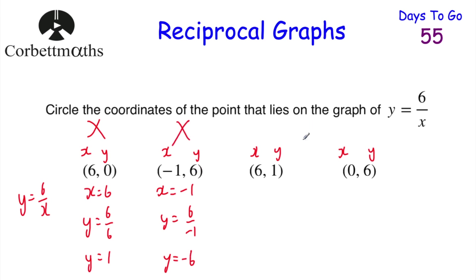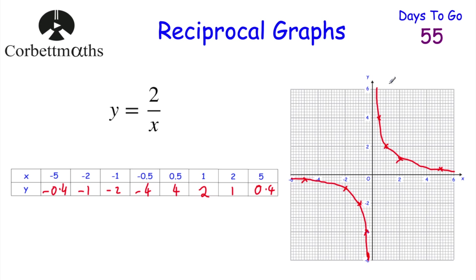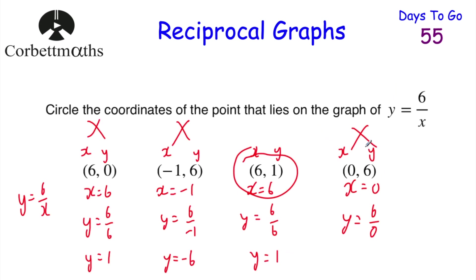Now let's check (6, 1). If x equals 6, we have y equals 6 divided by 6, and 6 divided by 6 is 1, so y equals 1. That works — so we circle that one. And finally for the point (0, 6): if x equals 0 we'd have y equals 6 over 0, and we can't divide by zero. Also, x equals 0 is where the graph would cross the y-axis, and remember — reciprocal graphs never have any points on the y-axis. So the answer is (6, 1).